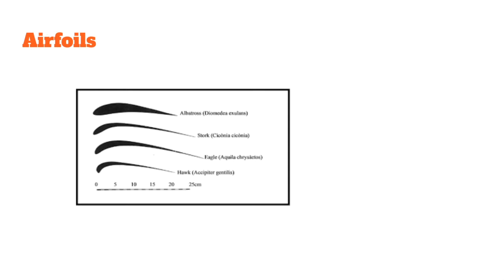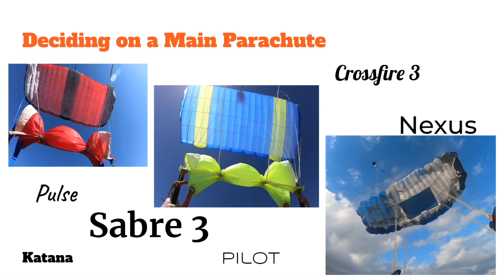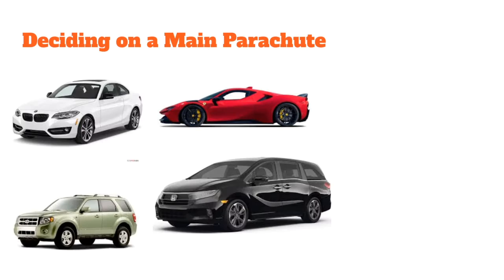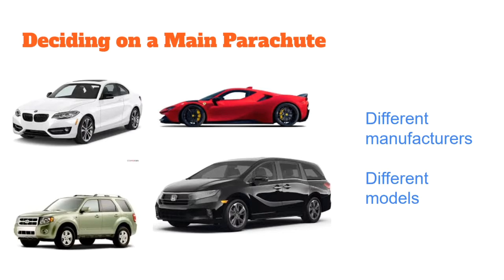That's a simple overview of why parachutes fly. Now let's look at what makes parachutes fly differently from one another and how you can go about choosing a good main parachute for you. There are lots of different parachutes out there — this is just a sample of some model names that get thrown around. It's kind of similar to vehicles: your goals and how you're planning to use it will guide your choices, whether it's a van, sedan, SUV, or sports car. There are different parachute manufacturers as well as different parachute models.